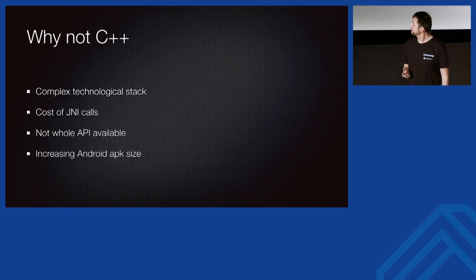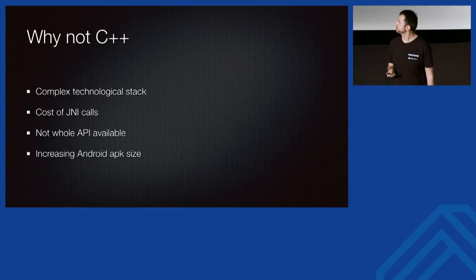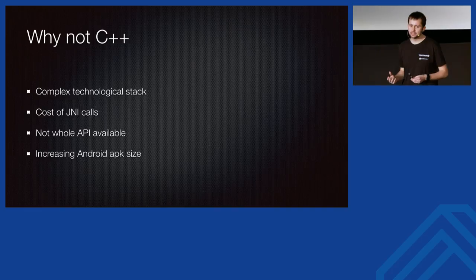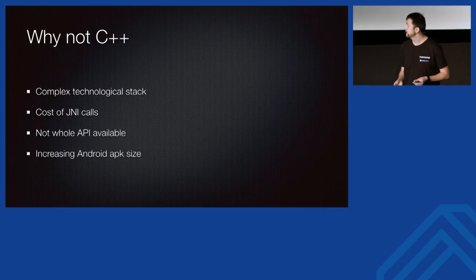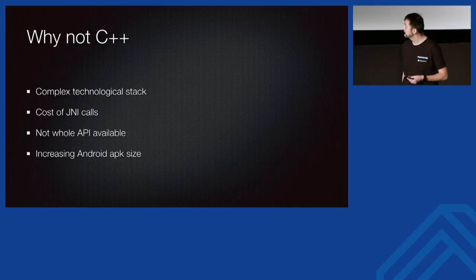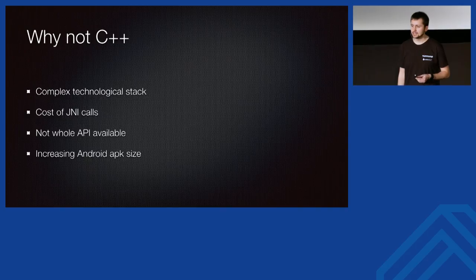Another reason not to use C++: not the whole API is available. When Google or Apple release a new version of Android or iOS, their first goal is to give great support for new APIs in Objective-C, Java, Kotlin, or Swift — not C or C++. Some things might be missing. And last but not least: increasing Android application size.